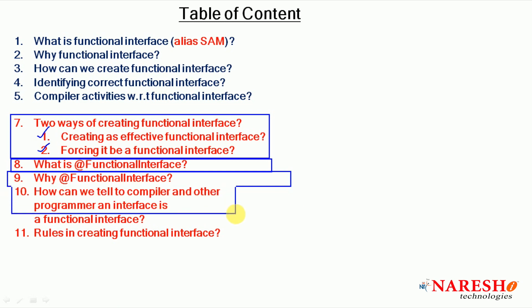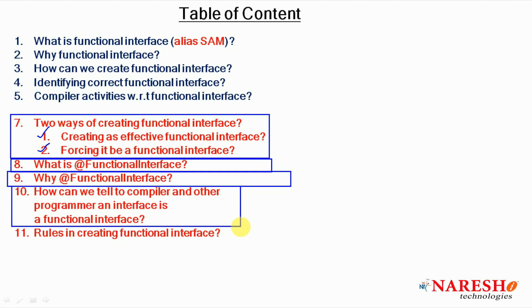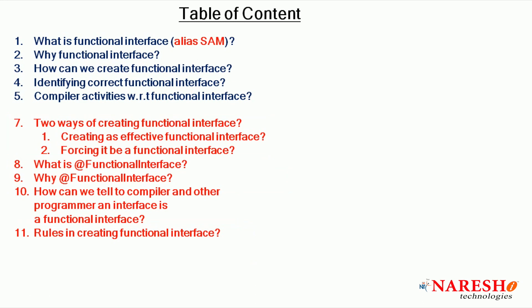To tell the compiler and other programmers that an interface is a functional interface, simply declare it with @FunctionalInterface. The rule is: once you declare an interface as a functional interface using @FunctionalInterface, you are not allowed to add more abstract methods or make it an empty interface — only one abstract method is allowed. Without the annotation, the compiler will not throw an error for extra or missing abstract methods, but lambda expressions will fail.